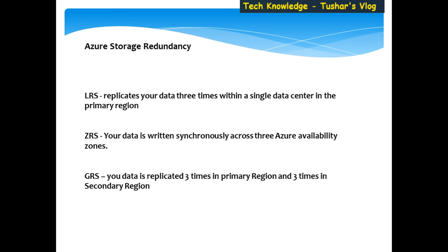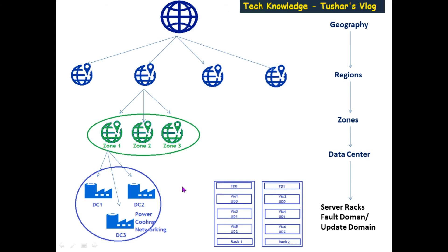In one of my earlier videos I explained Azure storage — I'll provide a link in the top left of this video. A quick recap: in the case of LRS, data is replicated three times in the same data center. In the case of ZRS, your data is written three times across three different zones. In the case of geo-redundancy, your data is written across two regions. So LRS works at the data center level, ZRS works at the zone level, and geo-redundancy works at the region level.